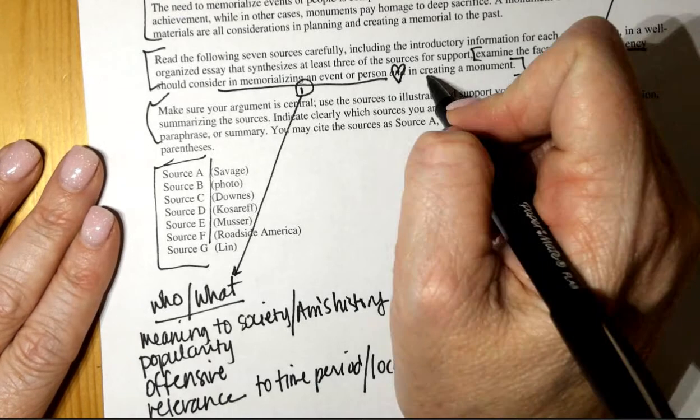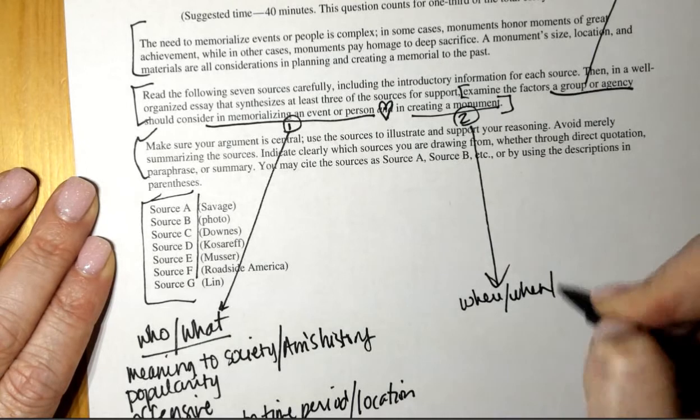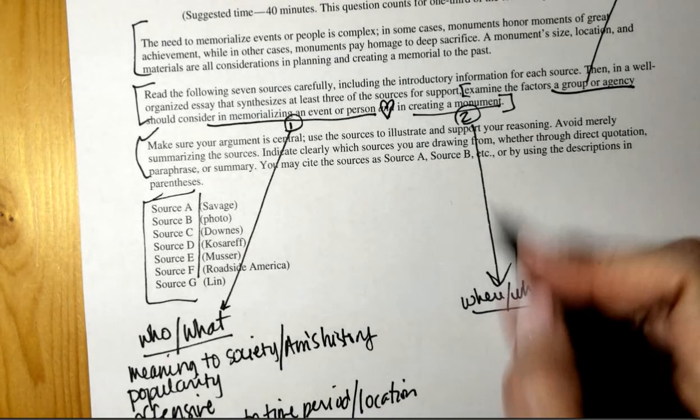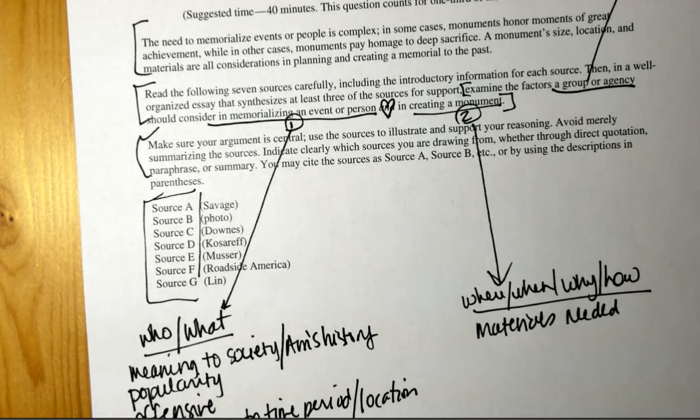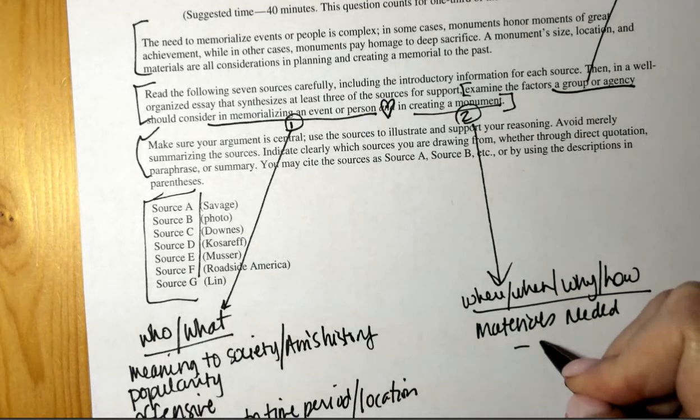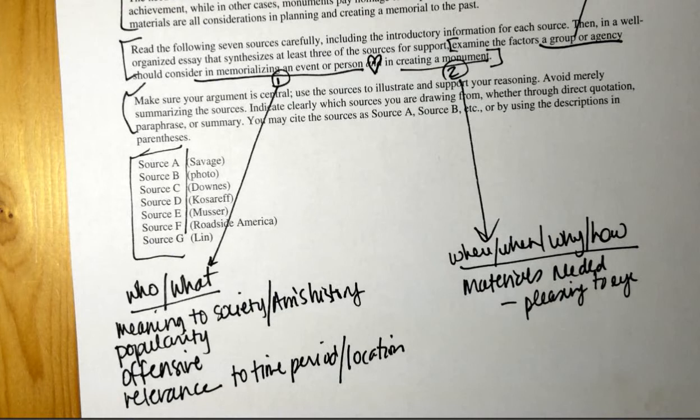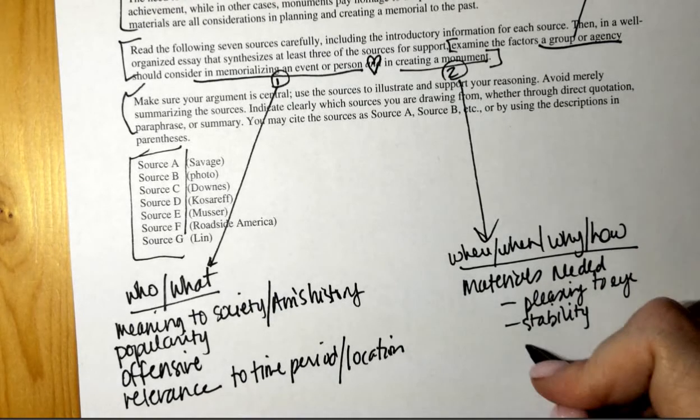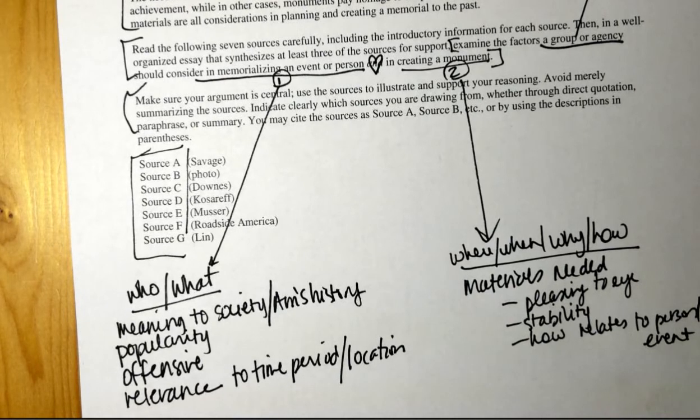What else. Okay so if it will offend someone and I think you could extend on that and say relevance to the time period or even just the location where you're building it right anything else you would want to consider when you're choosing an event or a person. All right so the second part of this is in actually creating right so that's the second step so now we talked about the who and the what so now we need to talk about the where when why and how basically right so what do we need to consider when we are creating a monument. Okay the materials needed and why is that important. Well yeah but specifically let's talk about the materials you're making it out of why is that important. Okay so it needs to be aesthetically pleasing and I'm copying out and saying pleasing to the eye. What else why else do materials matter. Stability. Okay.